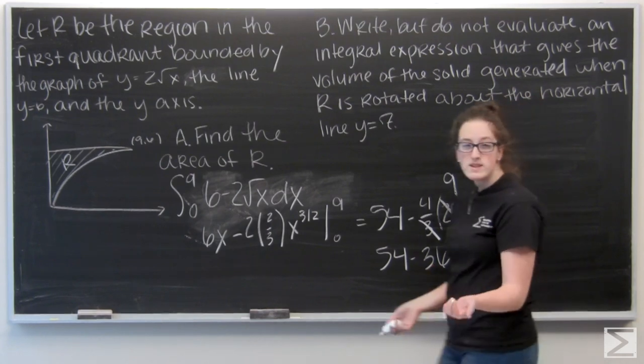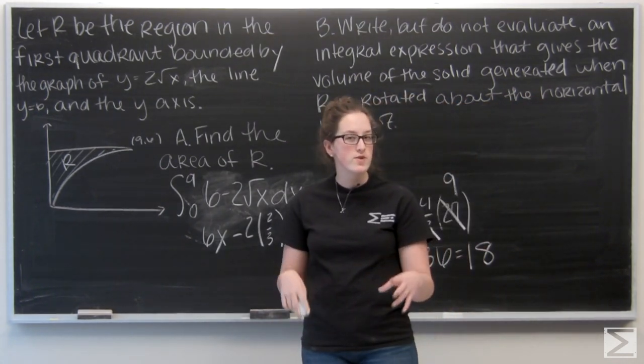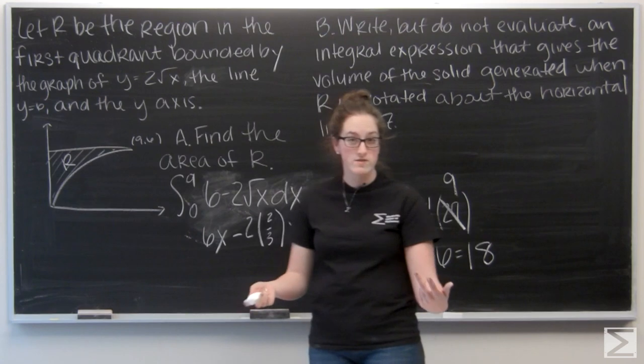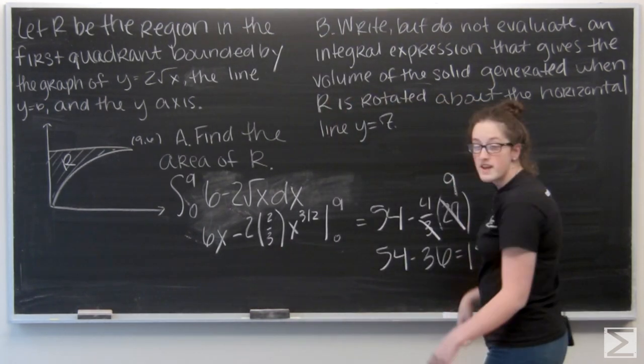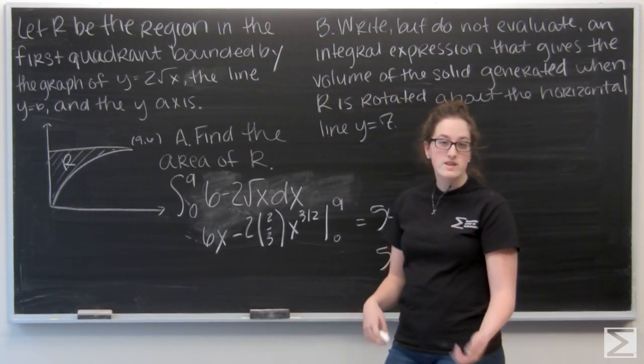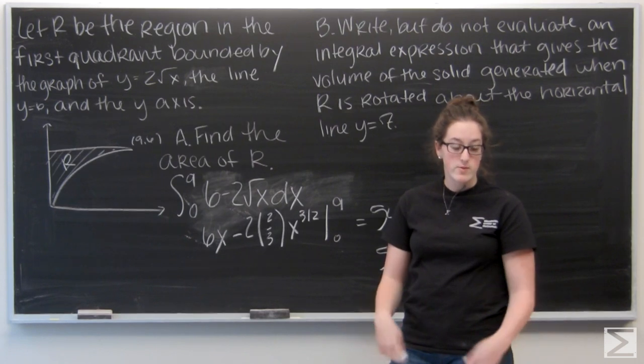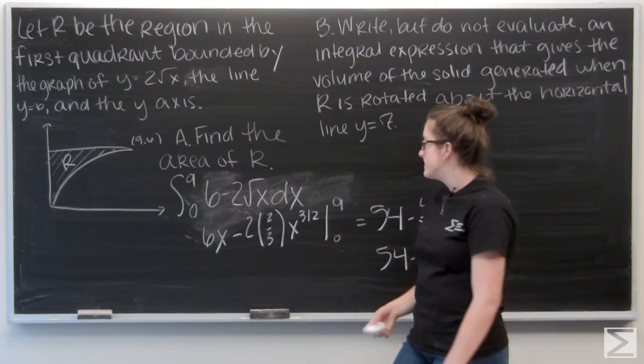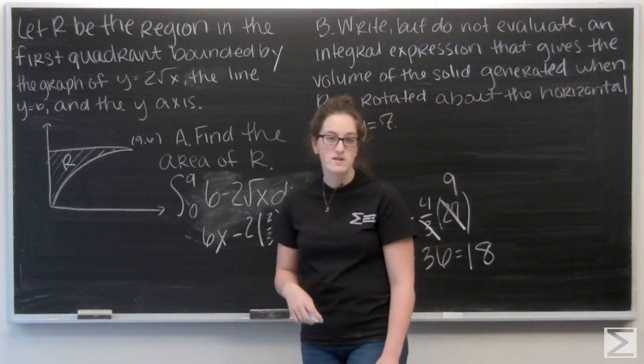Now, I don't want to leave it as just 18. Because the College Board, they really preferred you to give your answers in a sentence form. So I'm going to go ahead and say that the area of the region is 18 units squared. And I would write that out on my paper. That will be the answer for part A. Let's move on to B.